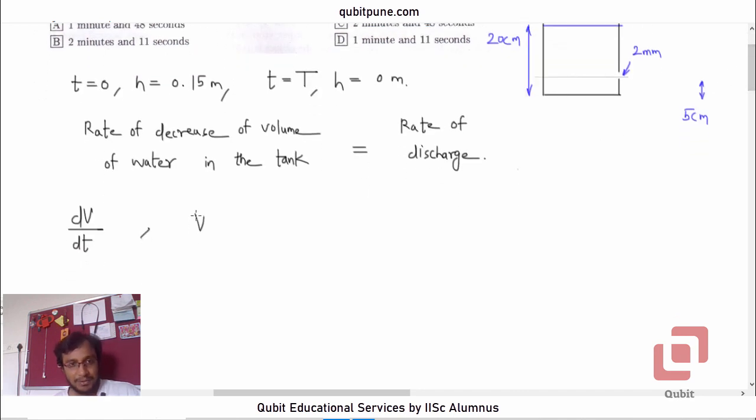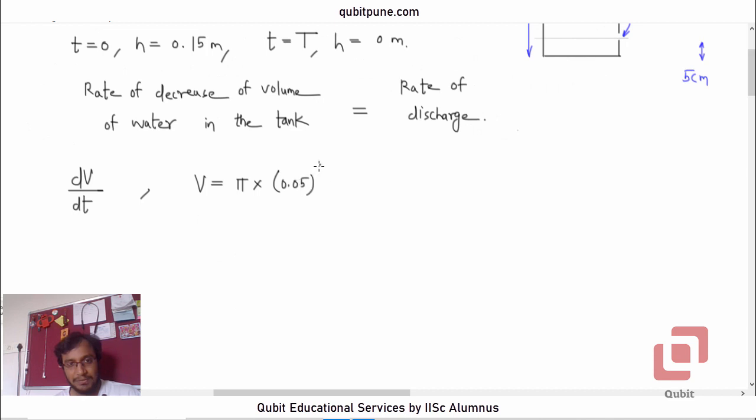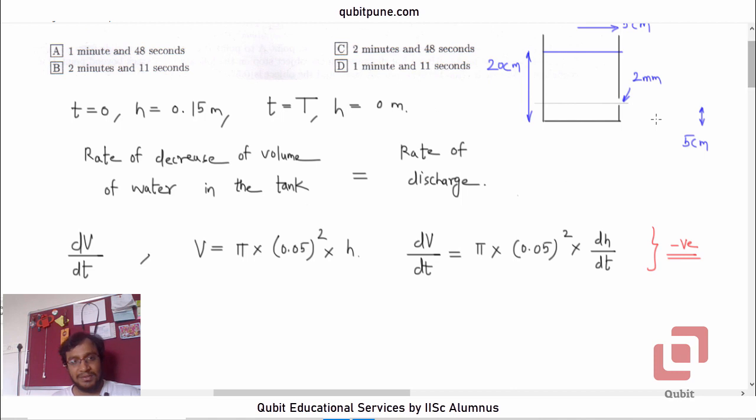Let us use the formula V = πr²h. So what is r here? r is not the radius of the orifice; we want the radius of the vessel, which is 5 cm, so 0.05 squared into h. So what will be dV/dt? dV/dt will be equal to π × (0.05)² × dh/dt. And this is actually negative because the volume is decreasing. So this is the rate of decrease of volume of water in the tank.